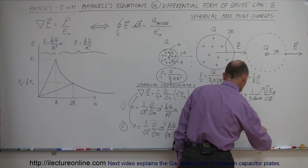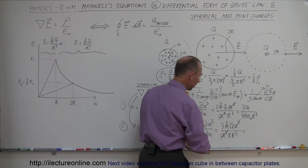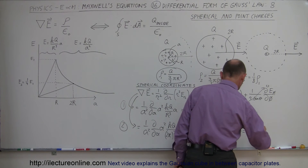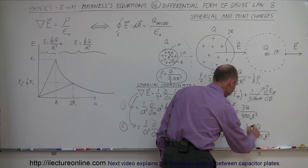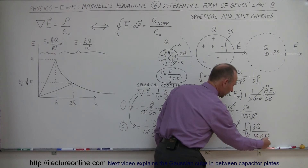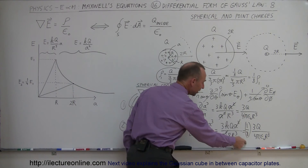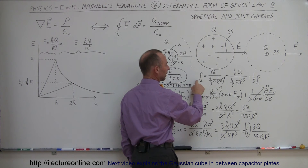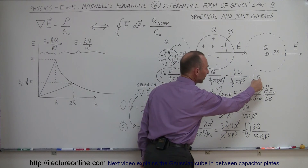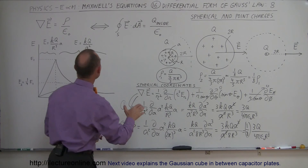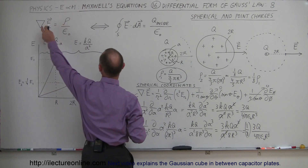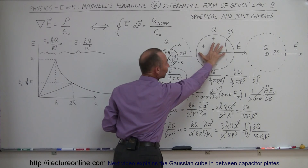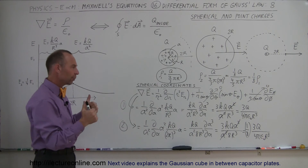Writing K as 1 over 4π epsilon naught, this becomes 3Q divided by 4π epsilon naught times 8R cubed. Notice that the quantity 3Q over 4π epsilon naught R cubed was the charge density of the small sphere, and one-eighth of that is the charge density of the large sphere — because its volume is eight times larger. So again, the density in the differential form refers to the density of the spherical object in question, and everything works out.